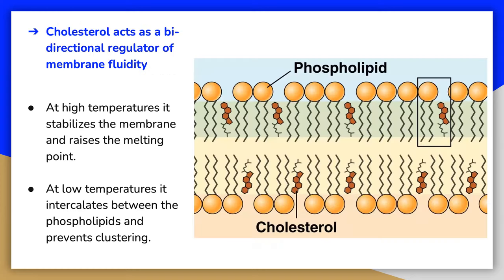Although cholesterol is often spoken of in negative terms, it is necessary for the proper functioning of the body. It is a component of the plasma membrane of animal cells and is found within the phospholipid bilayer. The amount of cholesterol in animal plasma membranes regulates the fluidity of the membrane and changes based on the temperature of the cell's environment.